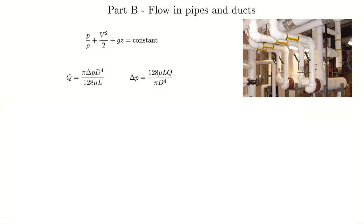In the last video, we looked at the analytical solutions we could get with laminar flows. In part B, we're going to focus on flow in pipes and ducts — a little bit on laminar flows, but mostly introducing turbulent flows, which tend to be more common in engineering practice. The goal of part B is to take a piping system and calculate the pressure losses, which helps us better design these systems by understanding where friction and other losses come from.